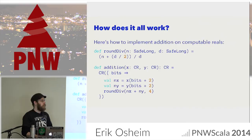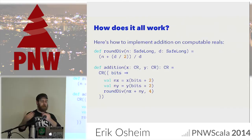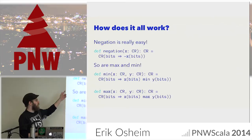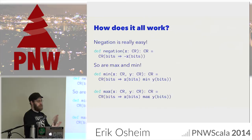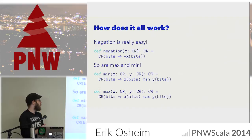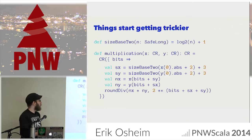Here is how we do addition for the CR type. There's a helper function that does rounding. When given two computable real numbers, for whatever bits of precision we want, we calculate the two inputs with an extra two bits of precision — at higher precision than we actually need — then add those and round. We have extra precision in hand so that when we lose some through addition, we still have enough. Negation is even easier: whatever you got from your input, just flip the result. Min and max are similar — calculate inputs at the desired precision, then return the smaller one.